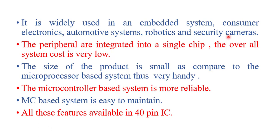For example, if we use a microcontroller for a washing machine, we have to perform different tasks, so the components selected for the washing machine are different. If we use a microcontroller in a microwave oven, we have to perform different operations, so the peripheral devices are selected according to the application or task performed.